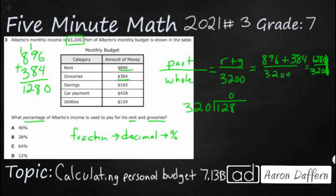320 goes into 128 zero times, so we place a decimal and add a zero. Three goes into 12 four times — and checking the multiplication, it works out exactly. So the decimal is 0.4.